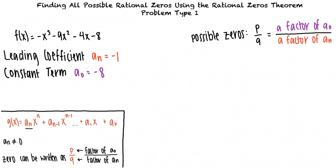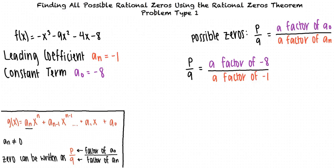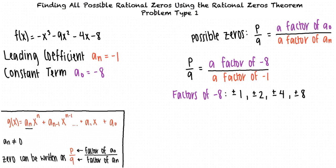This means any rational zero will be a factor of negative 8 over a factor of negative 1. The factors of negative 8 are positive or negative 1, positive or negative 2, positive or negative 4, and positive or negative 8. The factors of negative 1 are positive or negative 1. So the possibilities for p over q are positive or negative 1 over 1, positive or negative 2 over 1, positive or negative 4 over 1, and positive or negative 8 over 1. Simplifying these fractions, our final list of possible rational zeros for f of x includes positive or negative 1, positive or negative 2, positive or negative 4, and positive or negative 8.